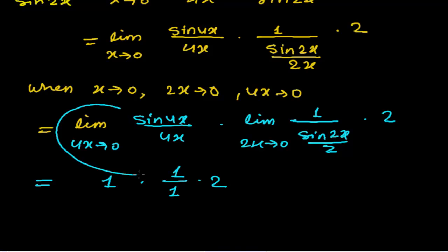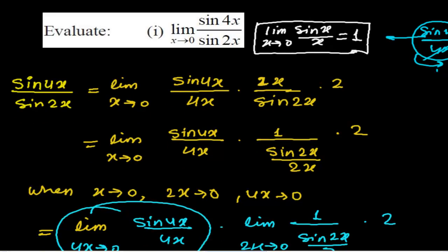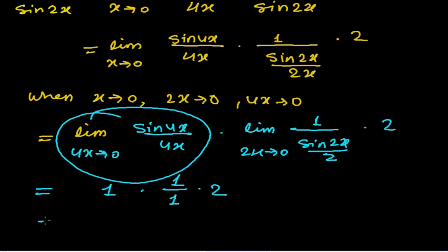Why am I writing like this? Because it matches with the formula. Limit when x tends to 0, sin x upon x equals 1. So it is exactly matching. Overall, it's 1 upon 1, that's 1. So 1 times 1 times 2 equals 2. Our limiting value is 2. We got the value 2.